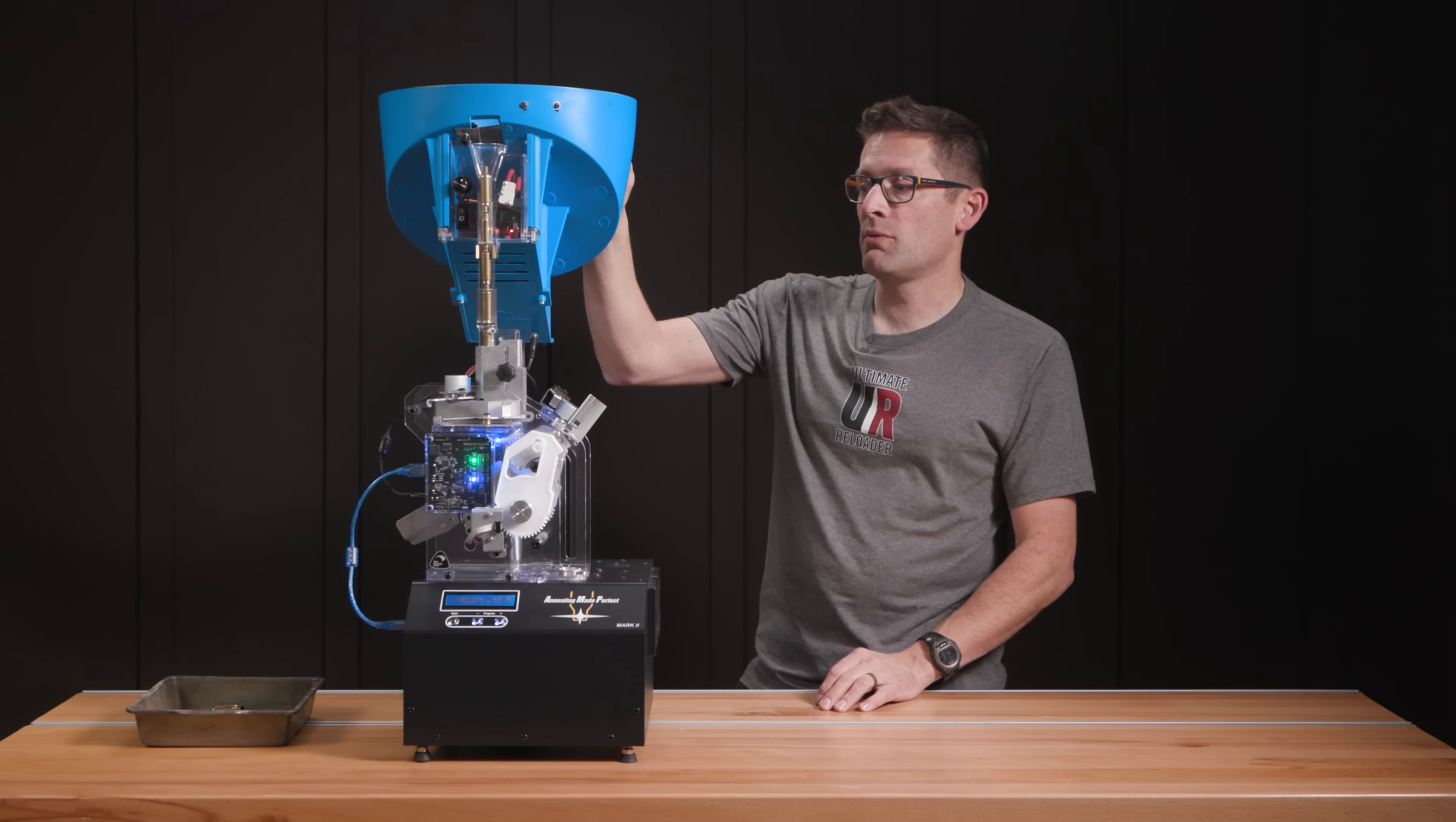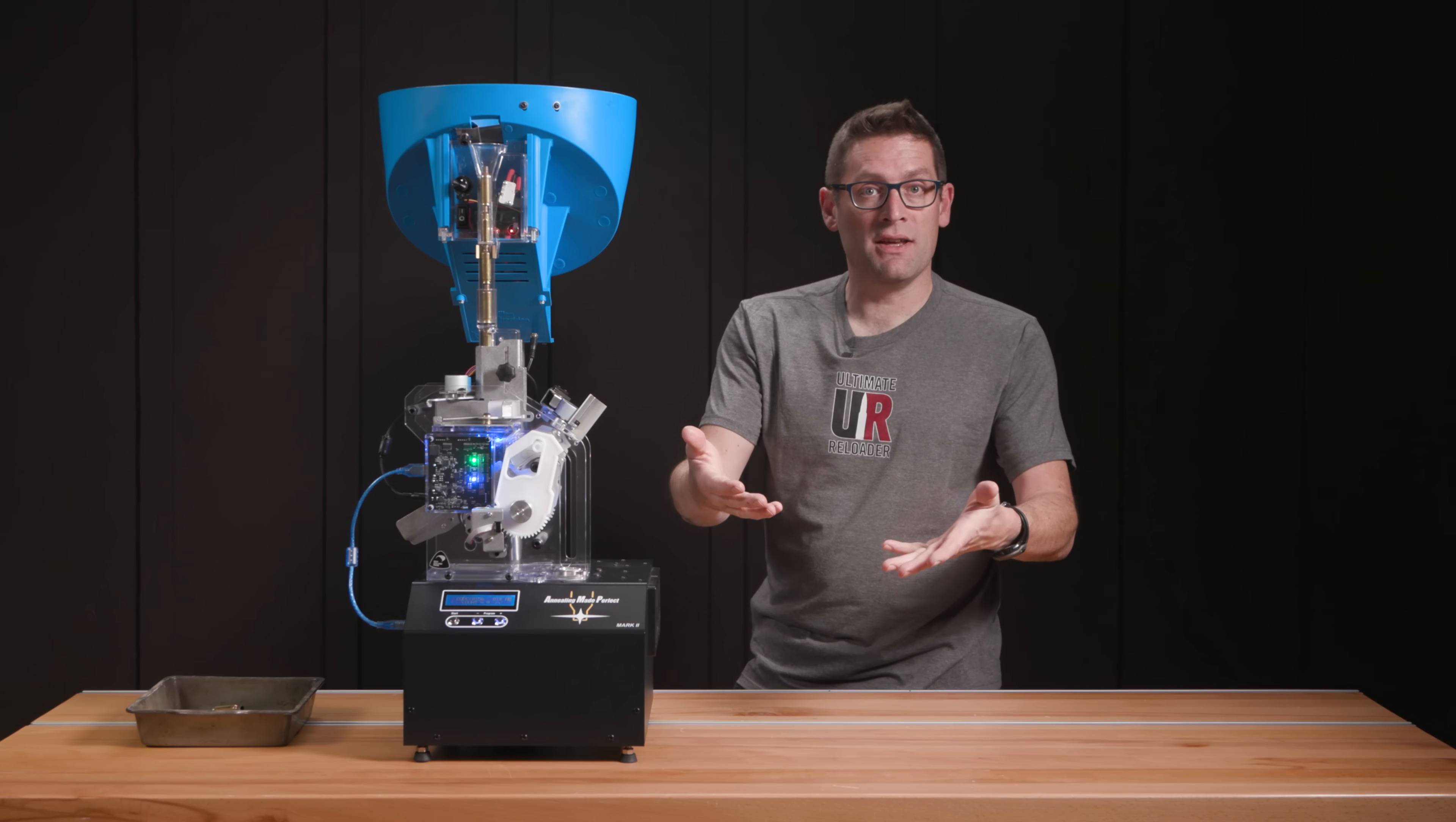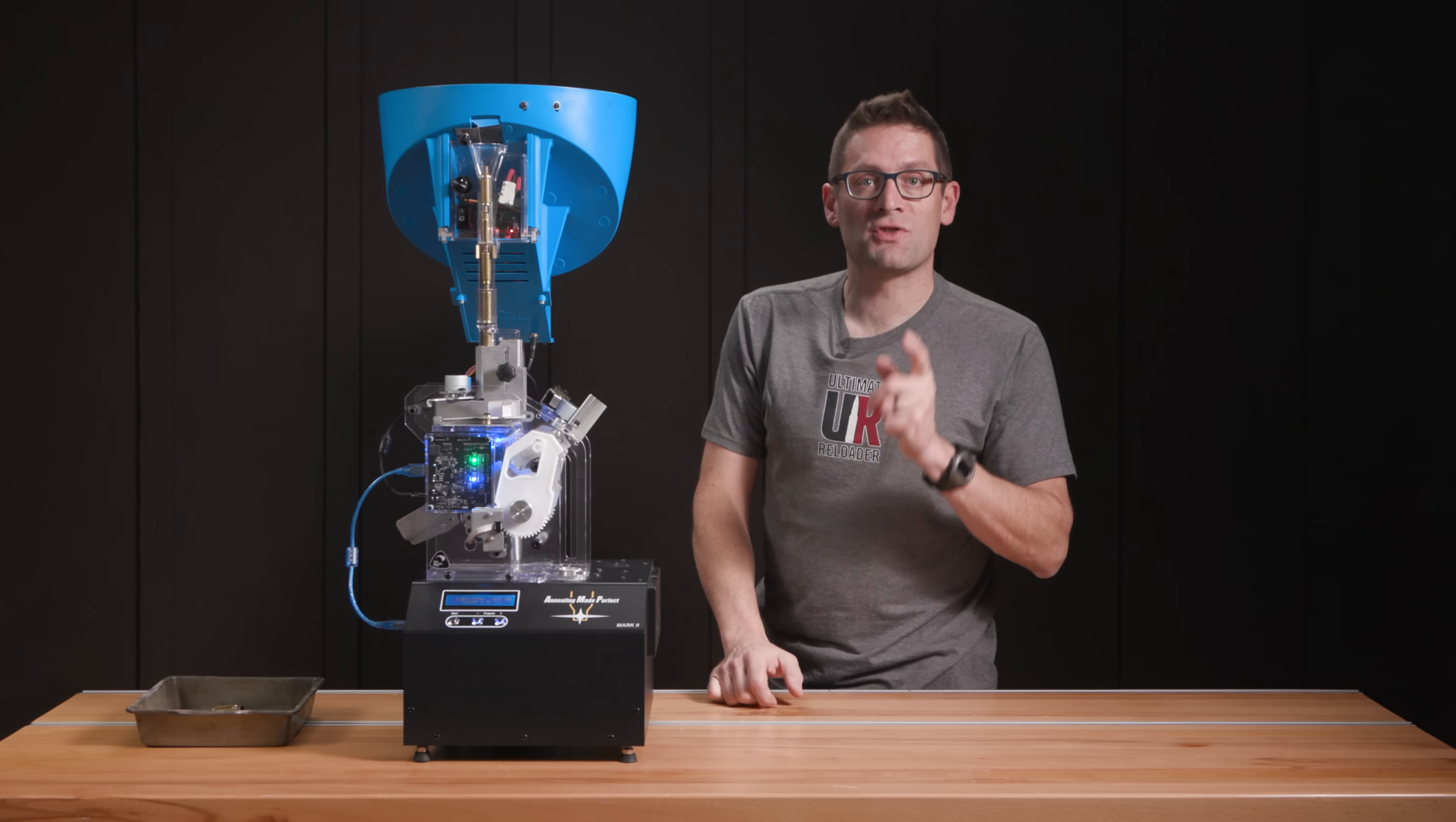The Dillon case feeder worked good with this as did the amp stand from Creedmoor Sports. I would definitely recommend a case feed system, whether it be the Hornady or the Dillon for this type of setup. And what I'd like to know from you is what are you using an amp mate for? What kind of cartridges are you loading and annealing? What have your experiences been? Drop a comment and we'll start a discussion.